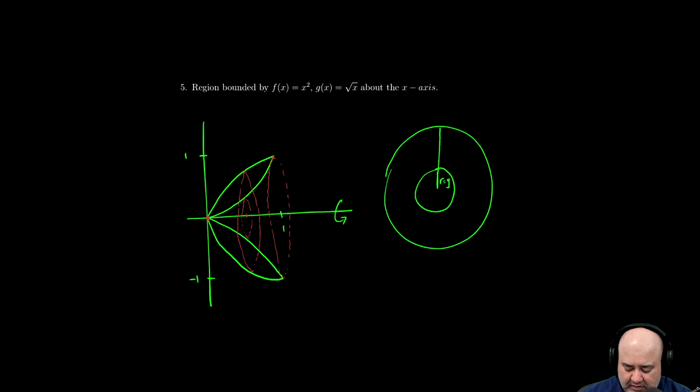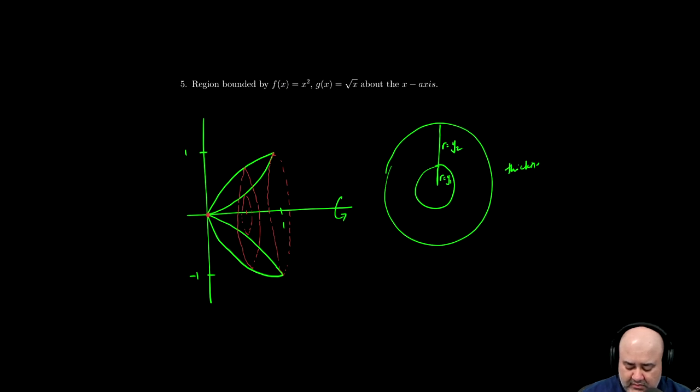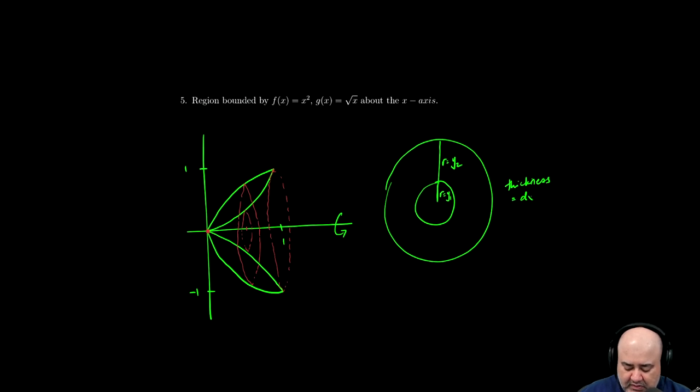So the radius of the inner circle will be some y1 value, the radius of the outer circle will be a y2 value. The thickness, because I'm slicing vertically, will be an x value, so dx.